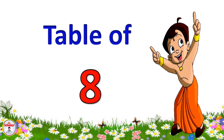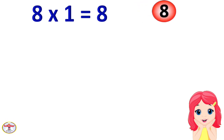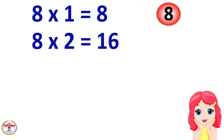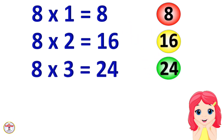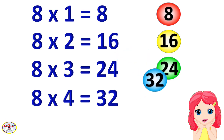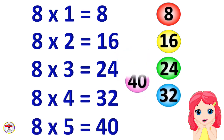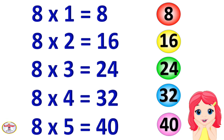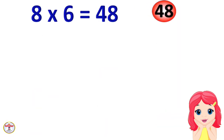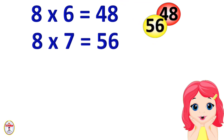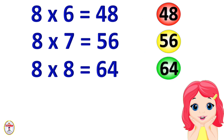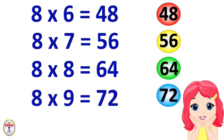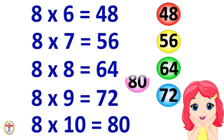Table of 8. 8×1=8, 8×2=16, 8×3=24, 8×4=32, 8×5=40, 8×6=48, 8×7=56, 8×8=64, 8×9=72, 8×10=80.